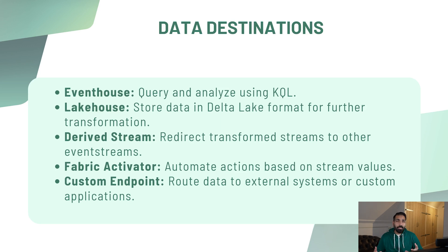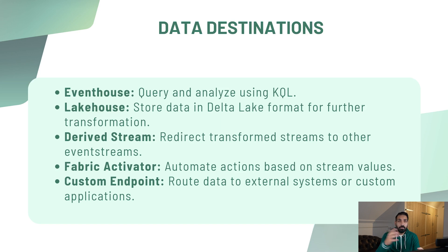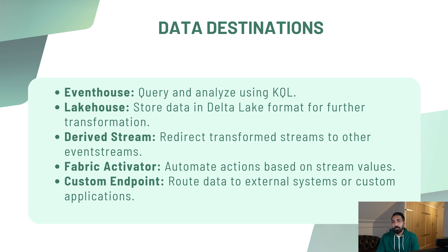What are the different data destinations for real-time data? First is Event House, where you can query and analyze data using KQL. You can also load data to your Lakehouse. Next, you can redirect event streams to another stream — transforming one stream to another. You can use Fabric Activator to automate actions based on certain threshold stream values. Lastly, custom endpoints let you route data to external systems or custom applications.